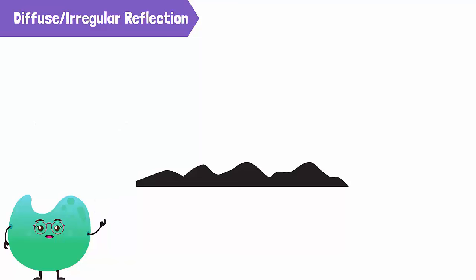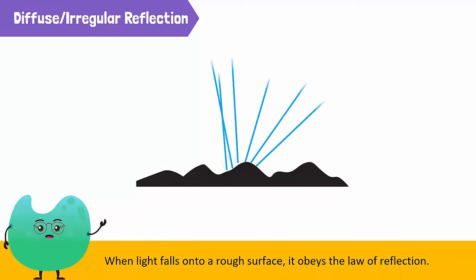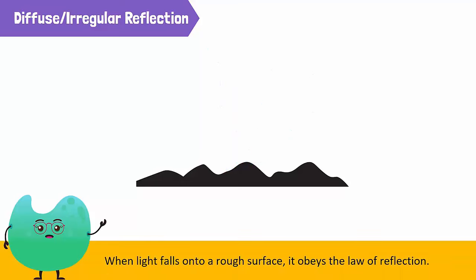When light falls onto a rough surface, it obeys the law of reflection. The normal of each point of incidence is different because the surface is irregular.